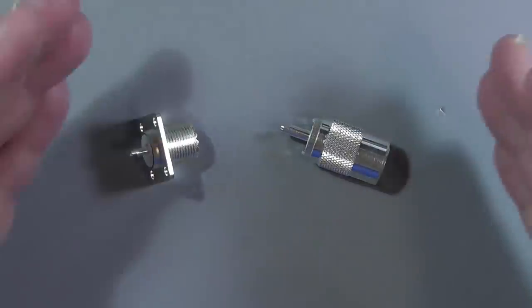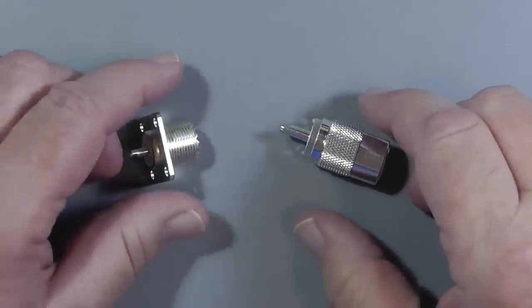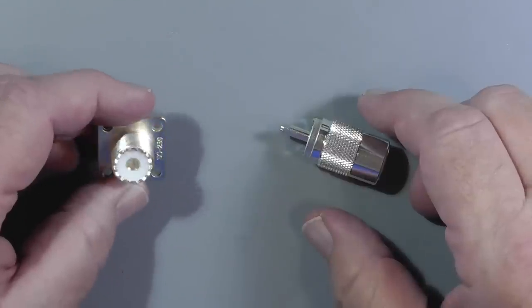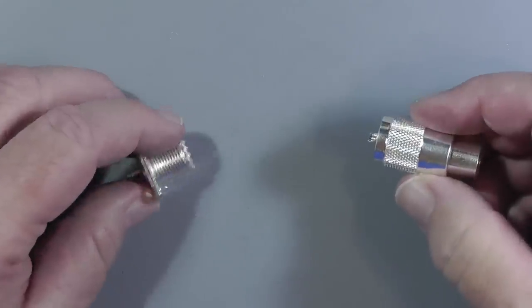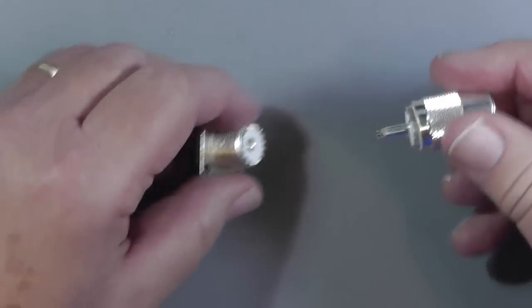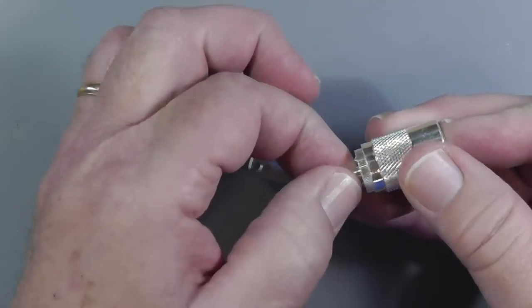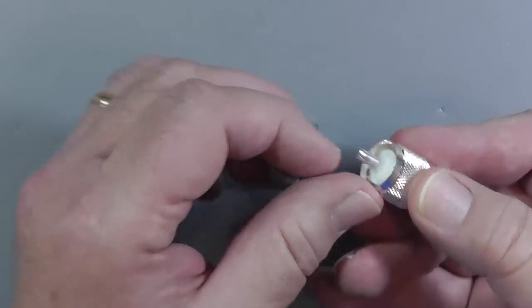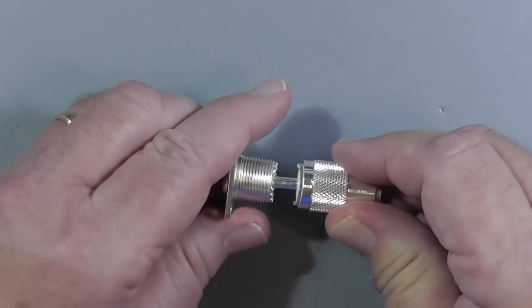These are the two halves of the so-called UHF connector. The term UHF connector is really a misnomer. These are good HF connectors. Although studies have shown that you can use these for VHF, and if you go up to UHF, you're going to lose a little bit. Basically, the center conductor is soldered to this and goes into the socket like this.